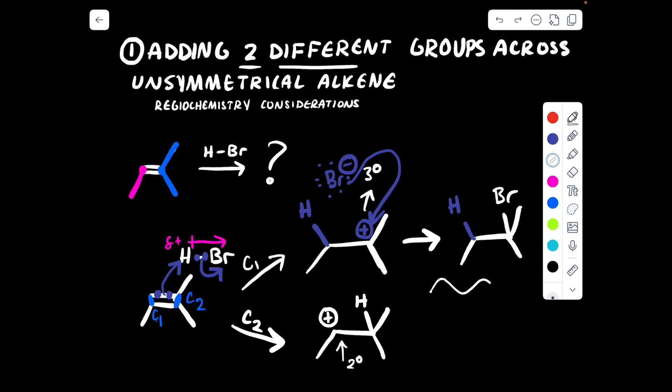So what do we get? We get the bromine attached to carbon number two. And there we have it — the product of our addition reaction of two different groups, H and Br, across an unsymmetrical alkene. The summary is that when two different groups add across an unsymmetrical alkene via what we refer to as a Markovnikov reaction — which is just regular conditions — the bromine is going to add to the more substituted carbon, and the hydrogen is going to add to the less substituted carbon, where substitution refers to substitution by other alkyl groups.